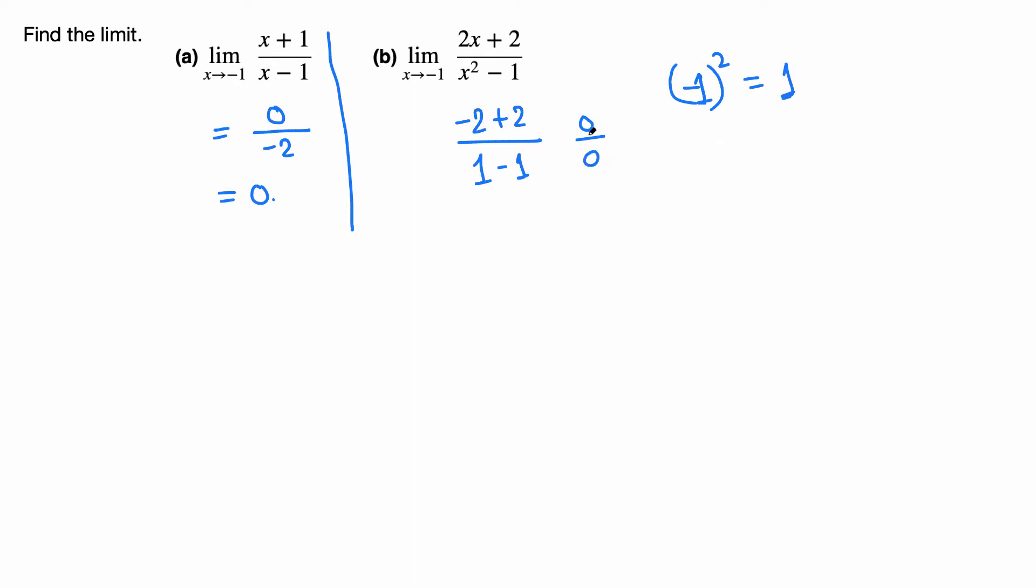So 0 over 0 is not simply 0, or you cannot cancel to 1. Whenever we have 0 over 0, that means if we graph this function at exactly x equals negative 1, we have a hole on the graph. For limits it's not bad; we can still compute the limit, it's just more work.